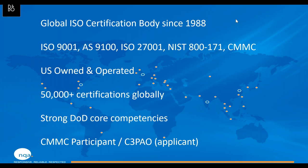NQA is a US-owned and operated certification body. There are also other international offices and auditors throughout the globe — all told, we work with about 50,000-plus certification clients. We have very strong DOD core competencies, particularly from the ISO and AS side. AS, the aerospace quality standard, is largely driven by DOD suppliers and contractors. CMMC is vectored right to the DOD supply chain, so there's good synergy. NQA is an early and ongoing CMMC participant and is in the process of becoming an accredited certification body — a C3PAO in the applicant phase.